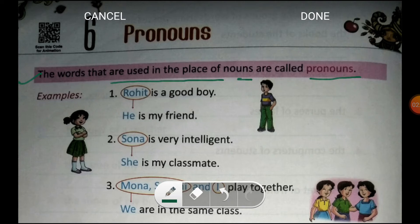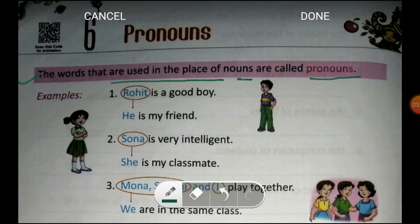Toh is tarah se, jis word ka istimal noun ki jagah pe kiya jata hai, usse hum pronoun kehte hain. Aapko simply yaad rakhna hai ki jis bhi word ka use hum noun ki jagah pe karte hain, usse hum pronouns kehte hain. Jaise: eek raja tha, woh bhoht cruel tha, woh garibon ko maarta tha, praja usse pasand nahi karti thi. Toh yahaan pe hindi mein 'woh' word maine raja ke liye istimal kiya — woh pronoun he hai. Praja usse pasand nahi karti thi — usse means him. He and him — both these words will be called pronouns because we used them in place of nouns.